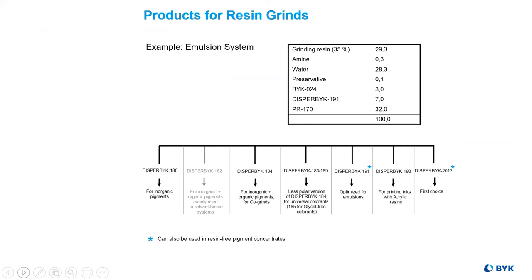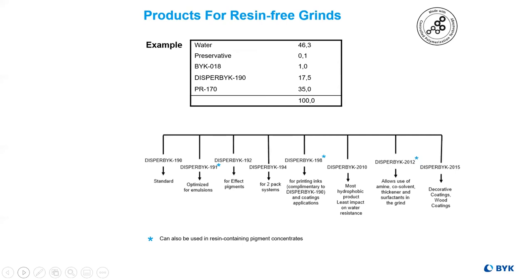When making proper additive selection, it's important to note the grind process. Is it resin-containing? If so, what's the compatibility of the additive and the resin system? Another question: will the additive actually reach the pigment before the resin? Will there be competitive adsorption? Proper additive selection ensures there is an additive robust enough to reach the pigment system first. Conversely, if the system is resin-free, different additives are needed to ensure proper viscosity reduction for enhanced grinding.